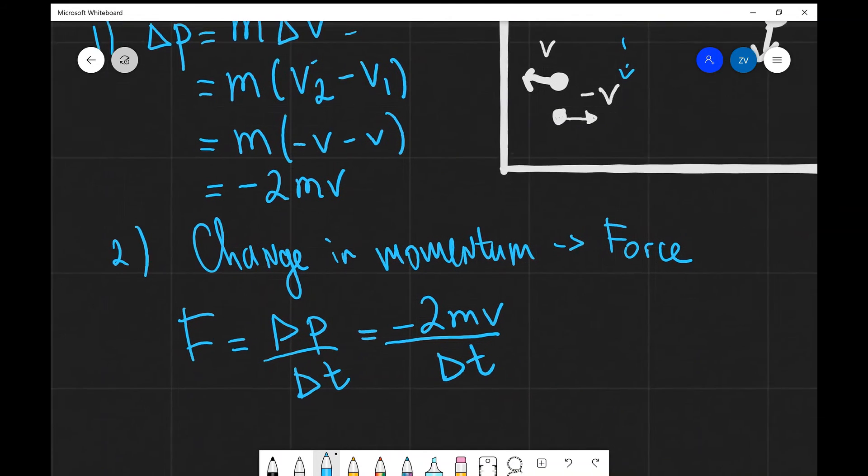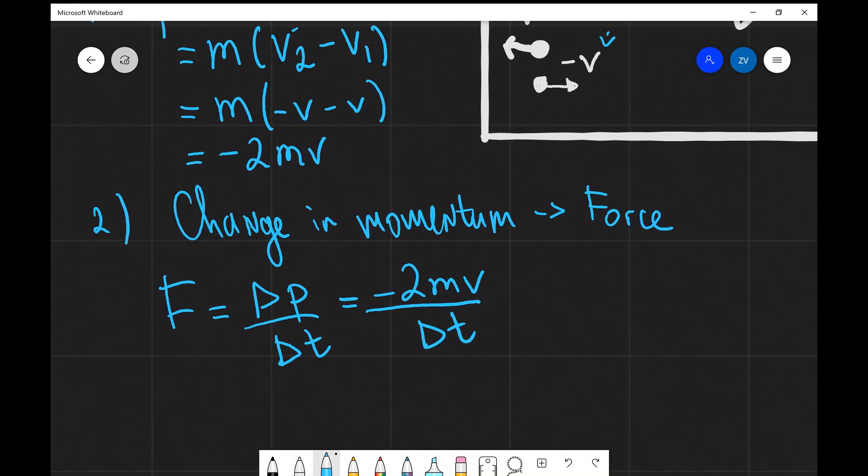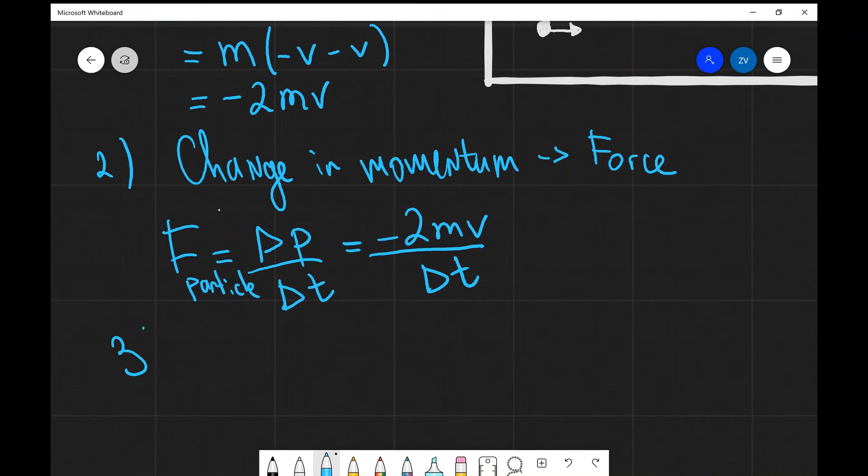This force, this net force, is the force that the particle has experienced. This is the force on the particle. Now the force on the wall, due to Newton's third law, will actually be the opposite. So this is equal to minus the force on the particle.